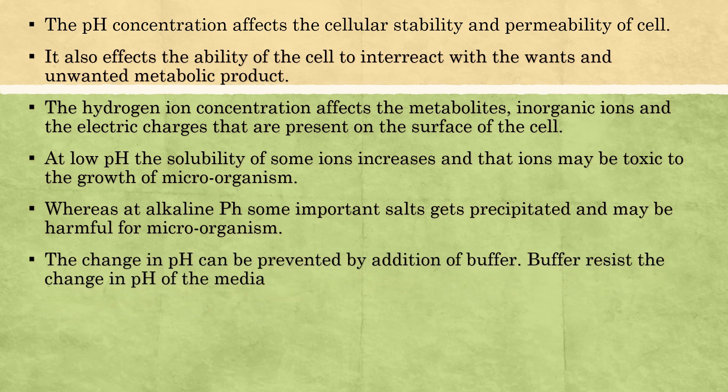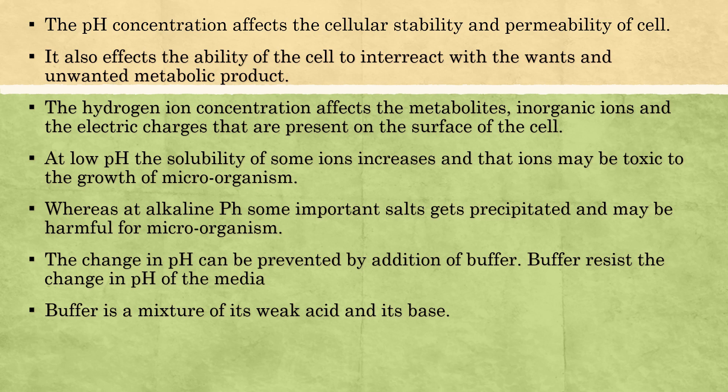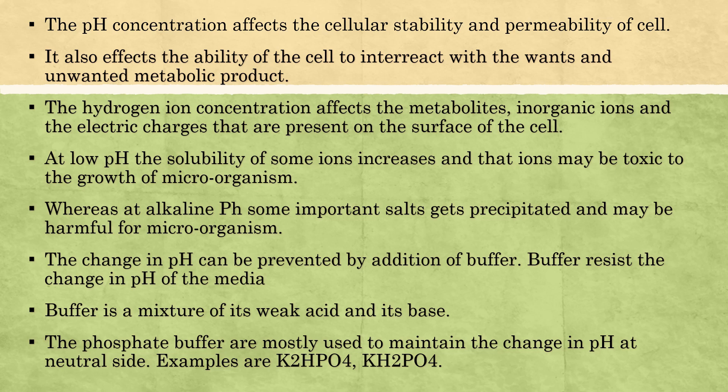The change in pH can be prevented by the addition of a buffer. A buffer is a chemical substance which resists the change in pH — it controls changes in pH and tries to maintain the pH at a certain value. A buffer is a mixture of a weak acid and its conjugate base. Generally, phosphate buffers are used to maintain pH near the neutral range. Examples include K₂HPO₄ and KH₂PO₄.